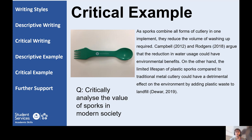In this example, the writer has critically analysed sporks. They've told us briefly what a spork is, but quickly gone on to talk about a couple of articles and the main argument about the environmental benefits of sporks. Additionally, the writer has brought in another author who talks about the limited lifespan of sporks having a negative effect on the environment, so they've looked at a different point of view. When you look at the question — critically analyse the value of sporks in modern society — they have answered it by bringing in those different angles and themes.